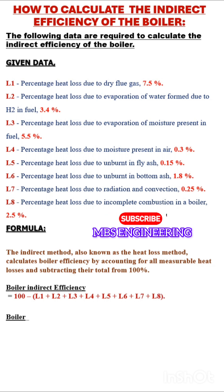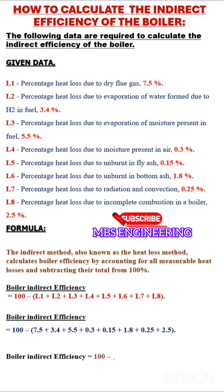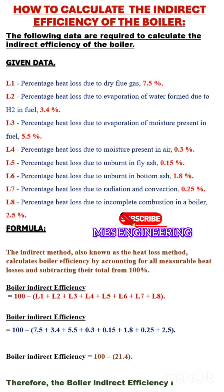Applying the given data to get the boiler indirect efficiency: the sum of heat losses is 21.4. Therefore, the boiler indirect efficiency is 78.6%.